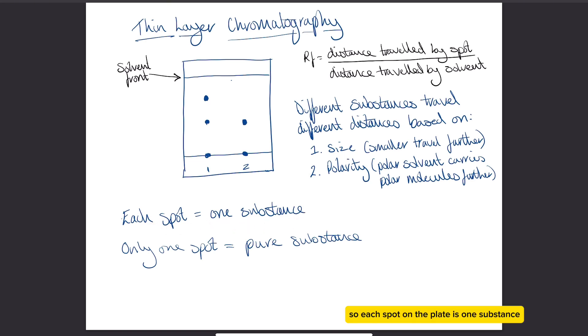Each spot on the plate is one substance. If we look at sample one, there's two substances in that mixture and sample two only has one. If it only has one substance then it's a pure sample or a pure substance. You can also use thin layer chromatography to test for purity. If you run a TLC plate and the sample only has one spot come out of it, then you can conclude it's a pure substance.